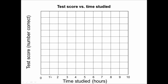For time studied I would just number these 0 through 10. For test score we can go 0 through 30 since that was the highest points that anybody earned. If I were to plot these points it would look something like this: roughly 1 and 5, 4 and 15, 5 and 14, 7 and 23, 8 hours studied and scored 22, and 9 hours studied and scored 25.